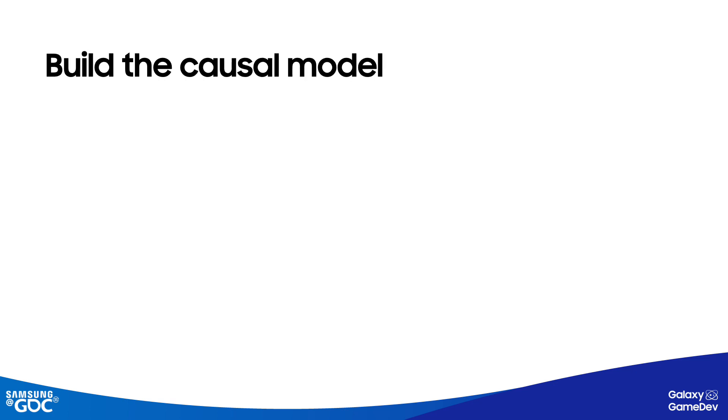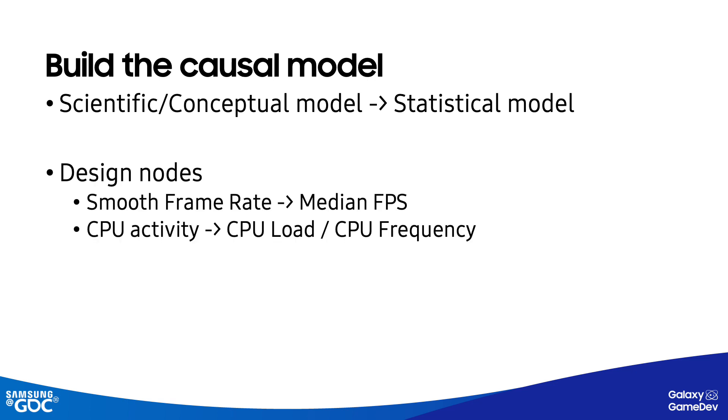When building a model of a complex system, one reasonable approach is to start with a conceptual model and then use it to develop the statistical model. With this we're working purely with components of the system that we think are important. For example, we may want to capture the concept of a smooth frame rate and represent it with a quantitative measure, such as the median FPS value. For the activity of the CPU, which we may think influences the frame rate, we can represent it as a load value and a frequency value. We can then reason about how these conceptual components relate to one another as pairs of causal connections, which when combined builds the skeleton of our eventual model.